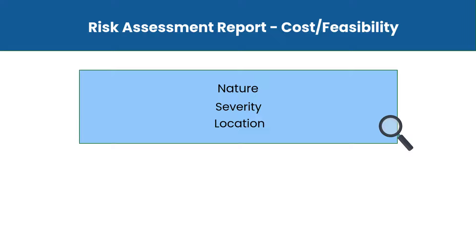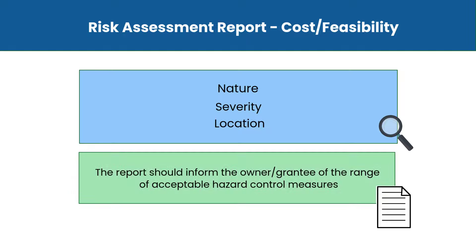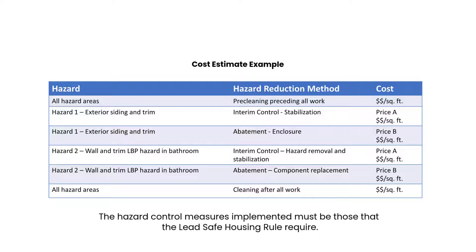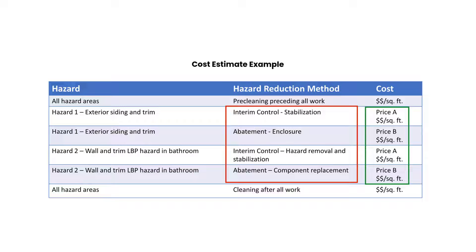After the nature, severity, and location of identified lead hazards are described, the report should inform the owner or grantee of the range of acceptable hazard control measures. The report should describe the cost and feasibility of site-specific lead hazard control options to assist the owner in making an informed decision. Costs for various treatments vary considerably from one locale to the next and are subject to market conditions, making it difficult to provide cost estimates. However, the risk assessor should at least indicate the order in which acceptable hazard control options for a given hazard fall in terms of relative initial cost. The risk assessor should also identify treatments that are unlikely to be effective.